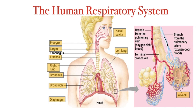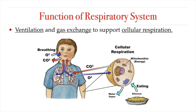There are also muscles, like the diaphragm, that contract and relax in order to move air in and out of our lungs. That's the respiratory system in a nutshell. The function of the respiratory system can be summarized as ventilation and gas exchange that happens in our bodies to support cellular respiration.